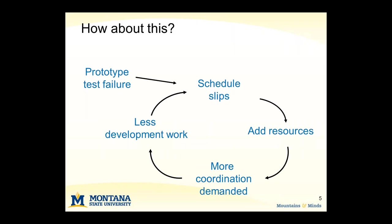If that doesn't sound familiar, maybe something like this: a failure in prototype testing where a project that was on time yesterday is now three months behind today. Management wants to be helpful, so when they see the schedule slip, they want to add some resources to the team. But whenever you add more resources, that requires additional coordination, meaning less time for development work. Even though the team is bigger, the schedule still continues to slip, and we can end up in another vicious cycle.